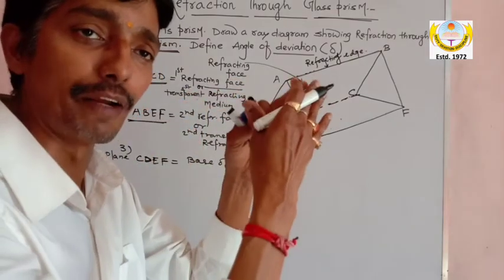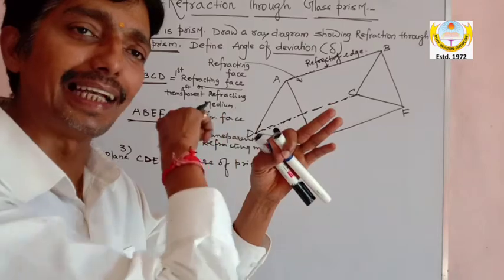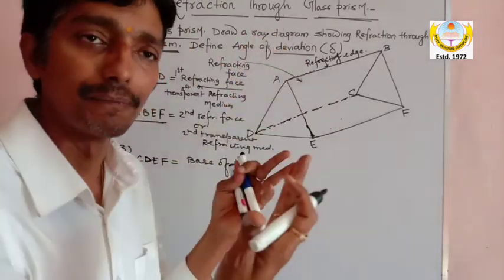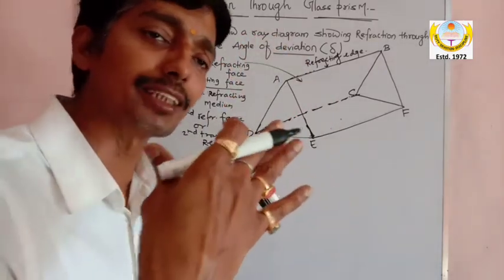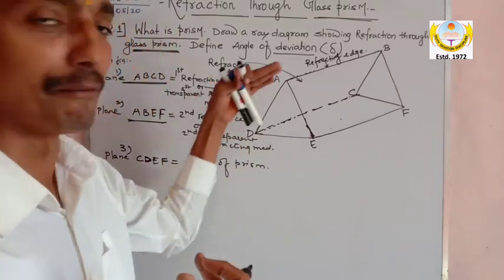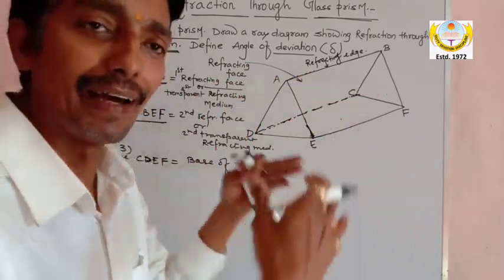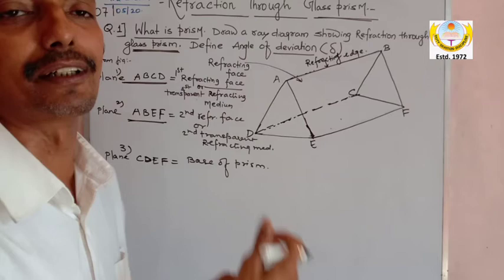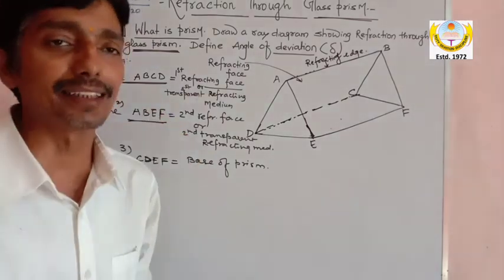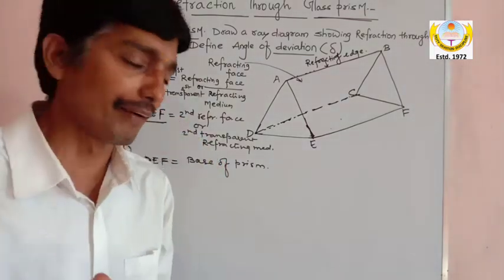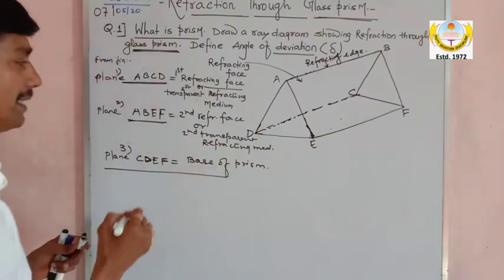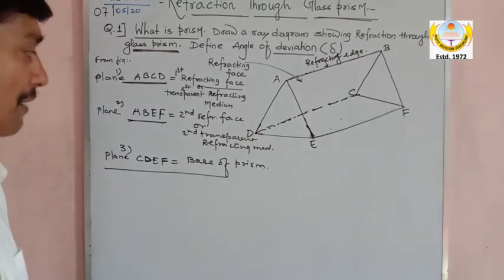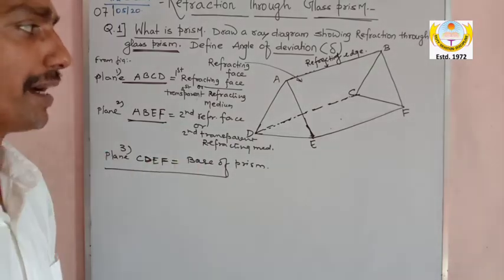When I say there are two refracting faces, it means light can enter from either the left face or the right face. The incident ray can come from the left as well as from the right. When it comes from the left, it will emerge through the right. When the ray goes in from the right refracting face, it will emerge from the left refracting face.